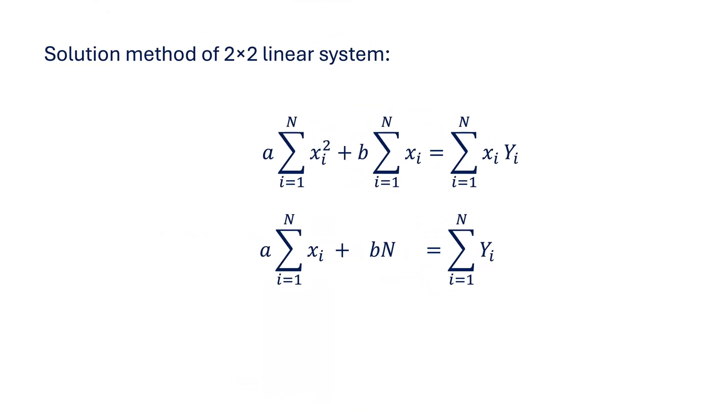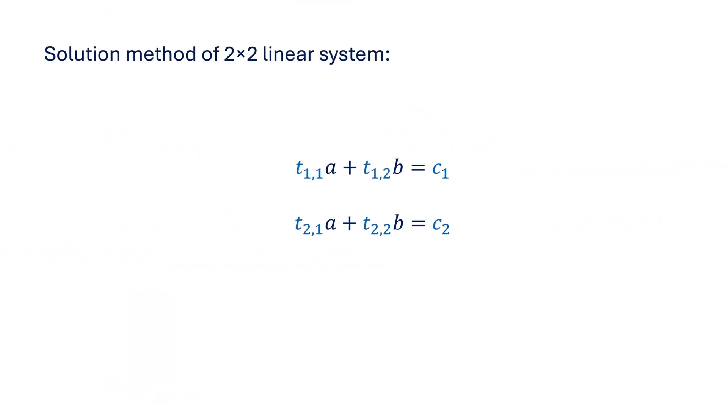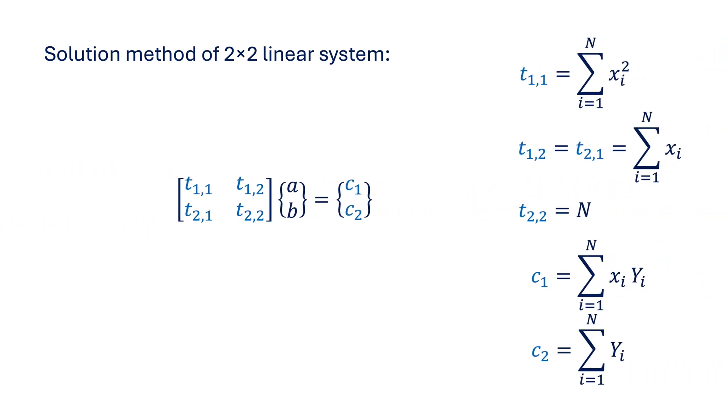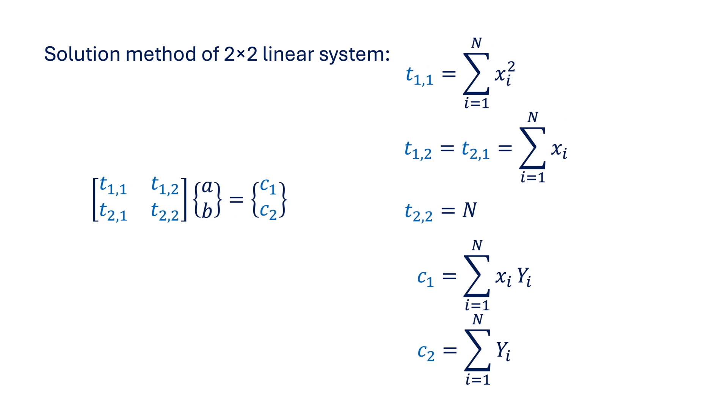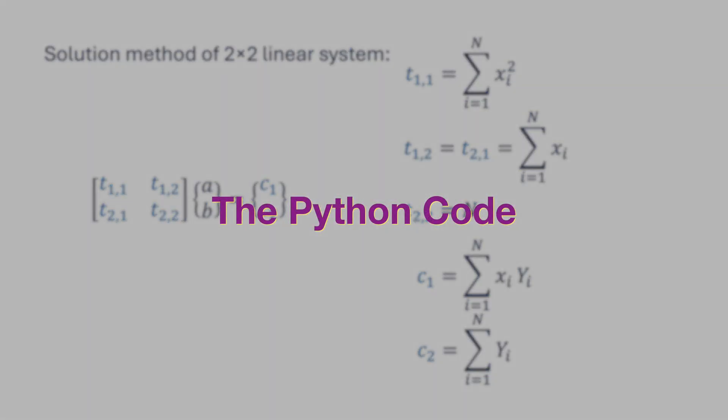So we can write the two-by-two system in terms of constant coefficients t and absolute terms c, or we can put the system in this matrix form. Now we have a straightforward solution method, and its coding will be as simple and direct.